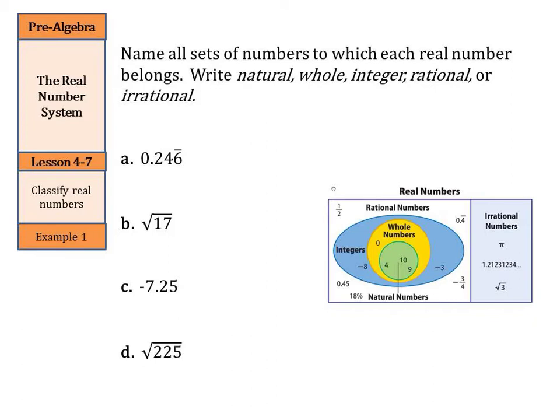Name all sets of numbers to which each integer number belongs. Write natural, whole, integer, rational, or irrational. Well, in the first one, we have 0.246, but the 6 repeats. And since the 6 repeats, we can then in a way write that as a fraction. So this can be considered a rational number, since we have the repeating.